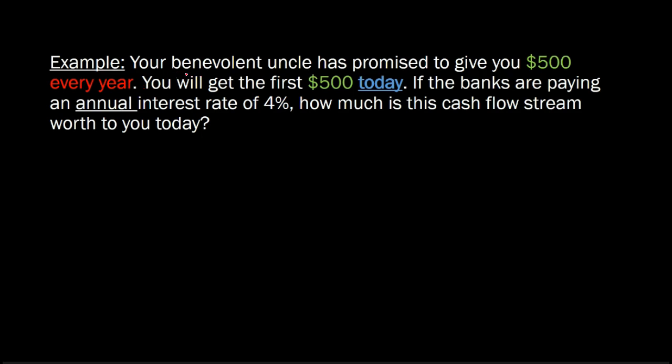Let's suppose that you have a benevolent and rich uncle and he promises to give you $500 every year. So it's very much like a perpetuity in the sense that you're going to get the same $500 and you're going to get it forever. The twist here is that your uncle seemingly feels a little bit more generous than he normally does. And he says, I'm going to give you the first $500, not one year from now, but starting today.